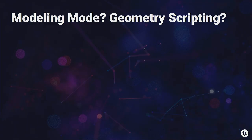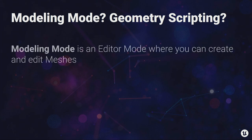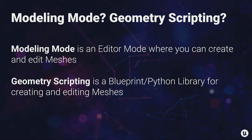Modeling mode is an editor mode in the Unreal editor where you can create and edit meshes — static mesh assets, also volumes, gameplay volumes, and something called dynamic meshes — basically doing your modeling like you might do in a DCC tool, but directly in the editor. Geometry scripting is a blueprint and Python library for creating and editing meshes. If modeling mode is interactive tools where you're pointing and clicking, geometry scripting is the script version where you're wiring up nodes to generate meshes.